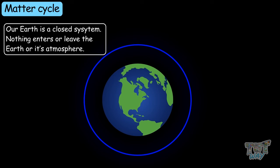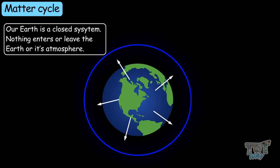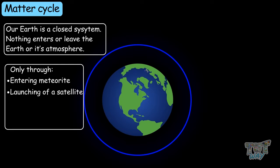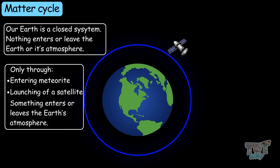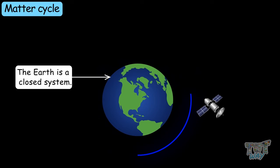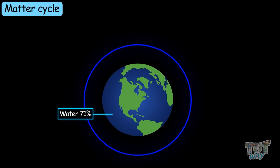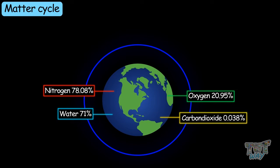Our Earth is a closed system. Nothing ever enters or leaves the Earth's atmosphere, unless something unusual happens — for example, if a meteorite enters the environment, or the launching of a satellite. Only through these ways can something enter or exit. Water, oxygen, nitrogen, and carbon dioxide, or all types of matter, maintain their percentage value in the Earth's atmosphere.